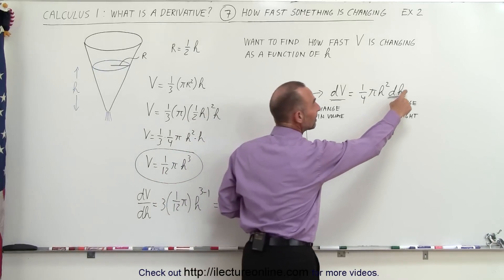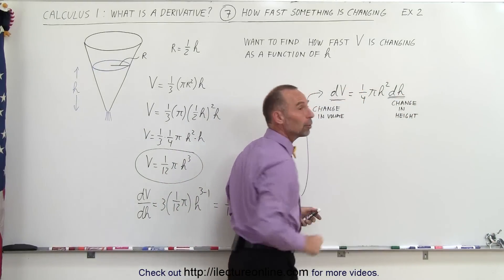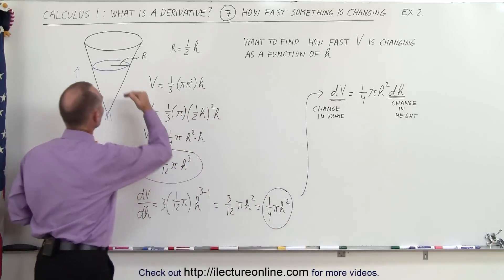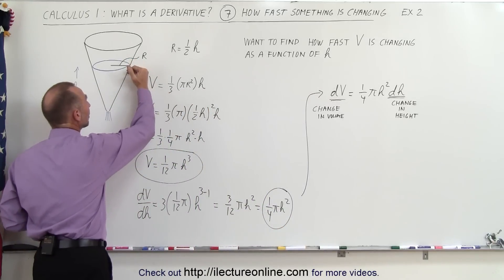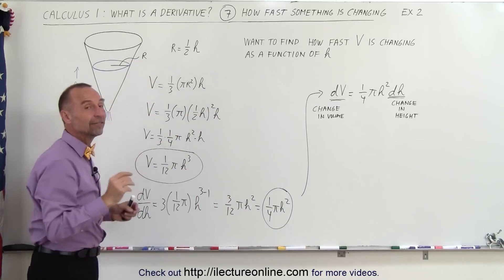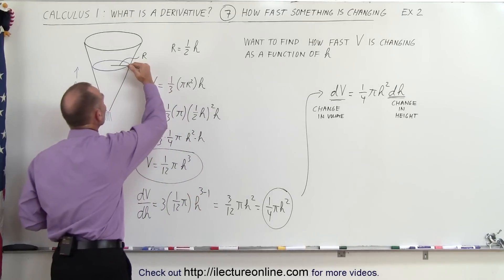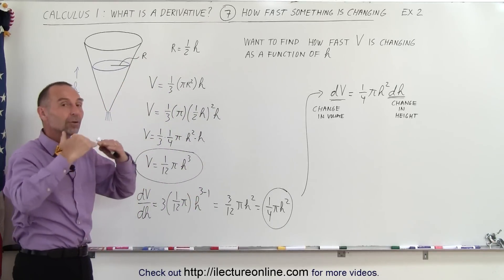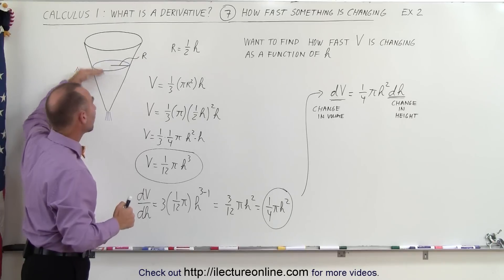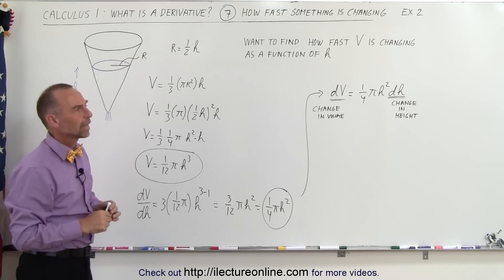Now notice, when the change in the height is negative, then the change in the volume would be negative. That makes sense. If the height decreases, then the volume decreases. If the change in the height increases, then the change in the volume will increase. So if the water level goes up, the volume goes up.